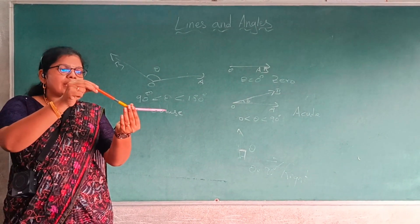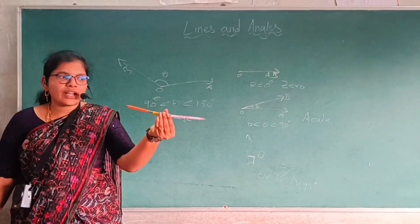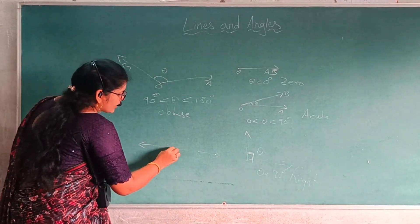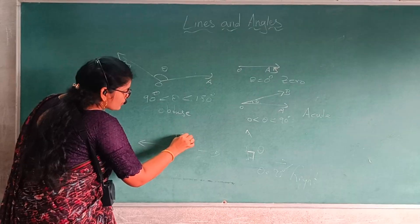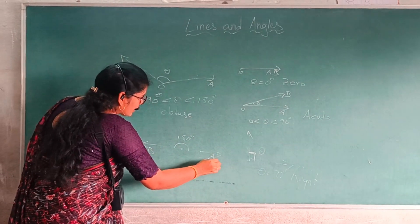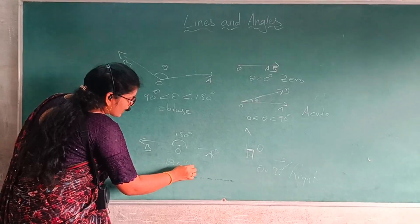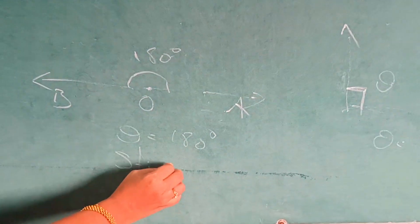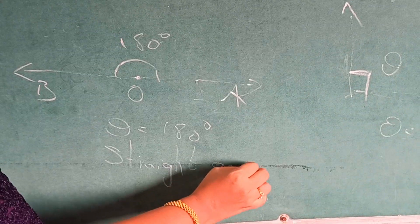Assume that if this ray makes a straight line — this is called a straight angle. In the word itself, it is straight. This is 180 degrees, and theta is equal to 180 degrees. This angle is called a straight angle.